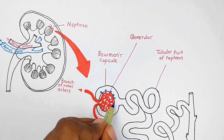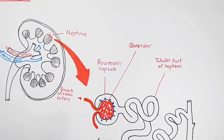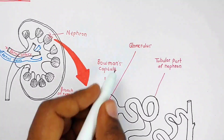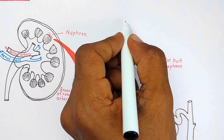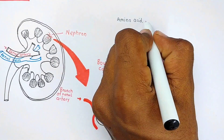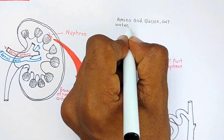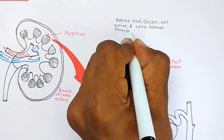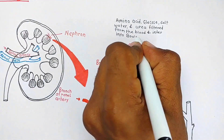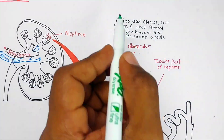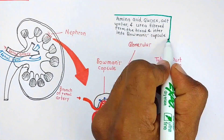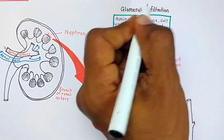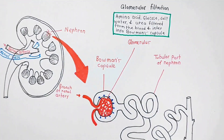From the glomerulus, substances filter into Bowman's capsule. The substances that enter include amino acids, glucose, salts, some water, and urea — filtered from the blood into Bowman's capsule. This is the first step of urine formation, called glomerular filtration.